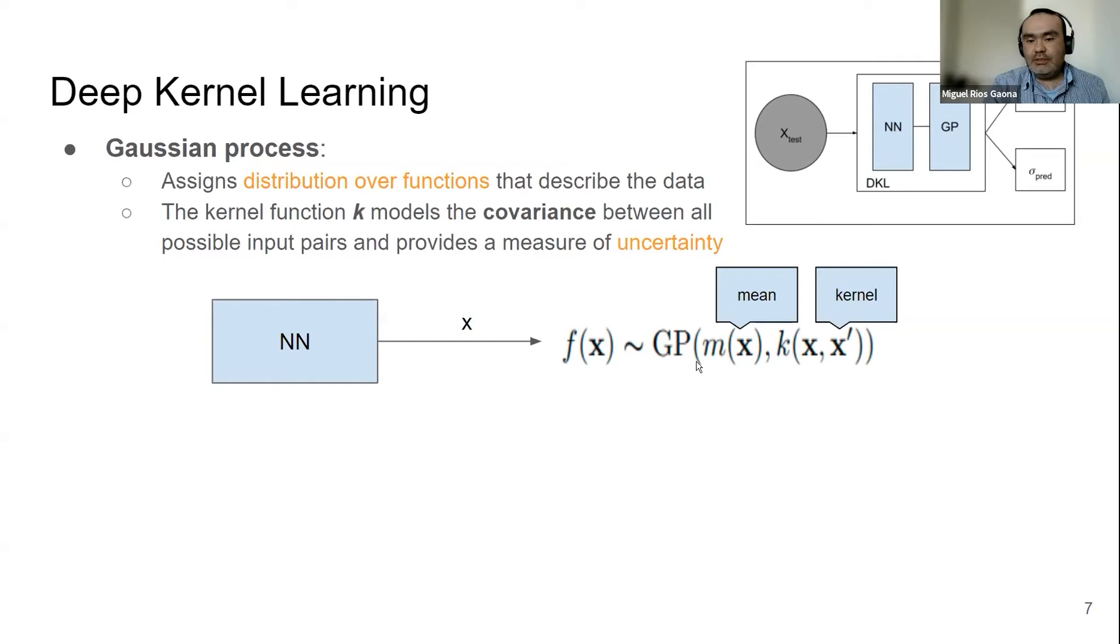For us to learn our function that we are interested in, that is going to be sampled from a Gaussian process with a zero mean and, more importantly, a kernel function. This kernel function gives us the ability to model the covariance between all possible input pairs and provides a measure of uncertainty.